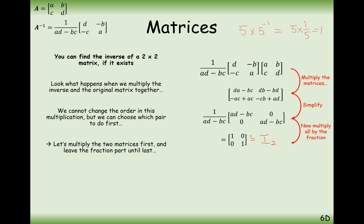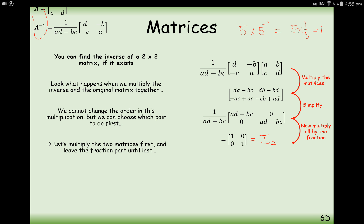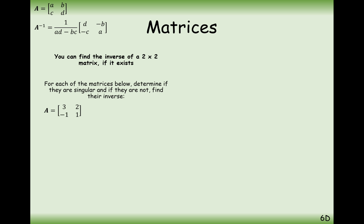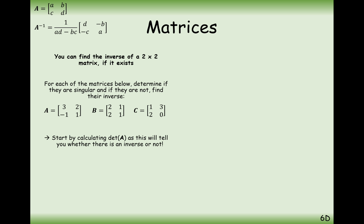Don't use I for inverse — never use I for inverse. You'll always use the notation of A and A to the power of minus 1 as your inverse. So let's have a go at a question. Matrix A is [3, 2; -1, 1], B is [2, 1; 2, 1], and C is [1, 3; 2, 0]. The question is: start by calculating the determinant so that you can then find the inverse of the matrix.